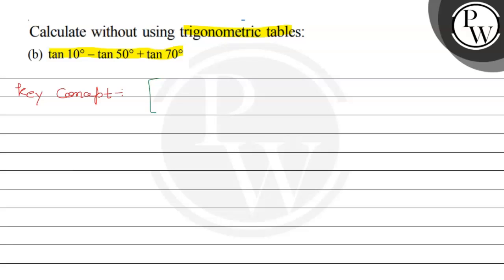I will use the identity: tan(a - b) = (tan a - tan b) / (1 + tan a · tan b). Okay, now let's start the question.